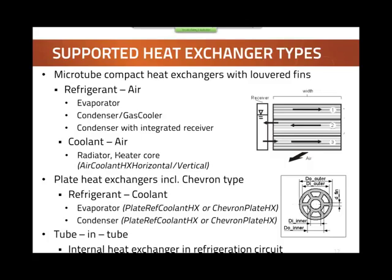This slide gives an overview of the heat exchangers supported by this library. The most important type is the microtube compact heat exchanger with louvert fins — all the geometry information is included, so you can parameterize such a heat exchanger with geometry values. We have these for refrigerant and air, which are typically used as evaporators and condensers in a refrigeration cycle. We also have the same type for coolant and air — coolant here is single-phase liquid — and they would be used for radiators and heater cores.